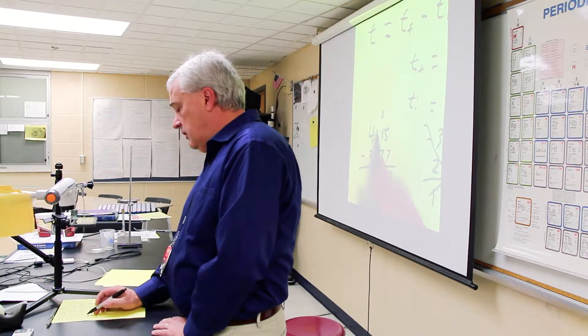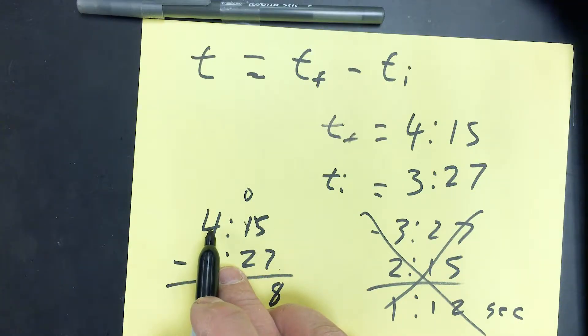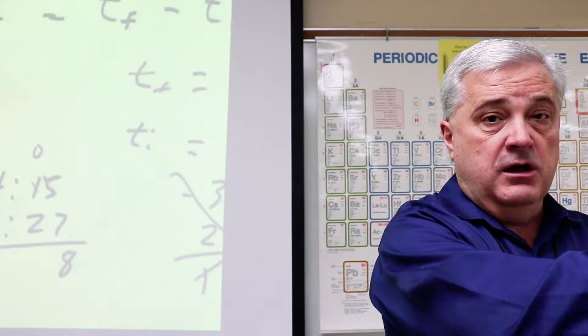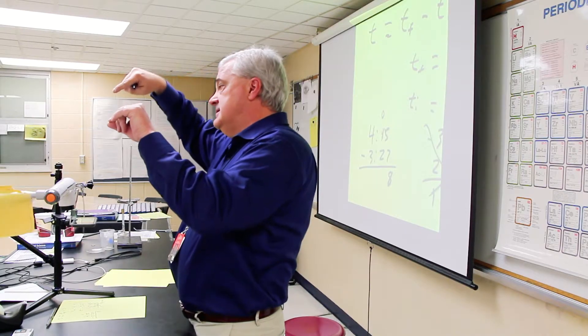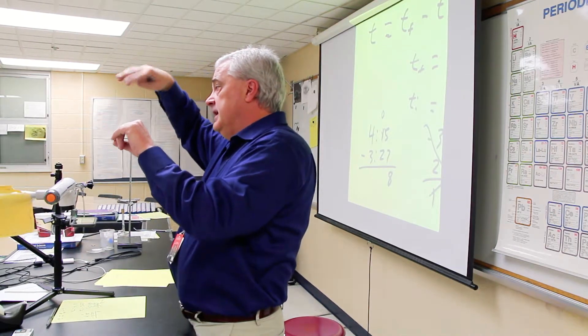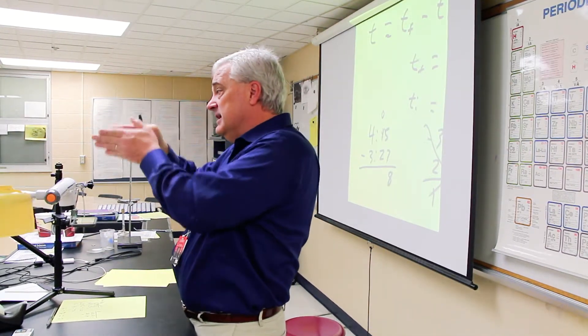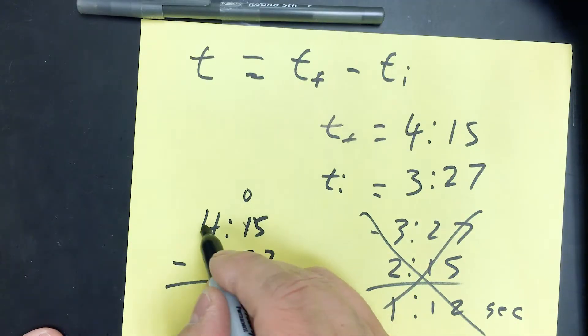We have to borrow across the colon. These are seconds and these are minutes. Now, when we borrow in regular math, we borrow from the next place over. So if we borrow from the 100s place, we take 1 over and add it to whatever is in the tens place. We take 10 tens over into the tens place.